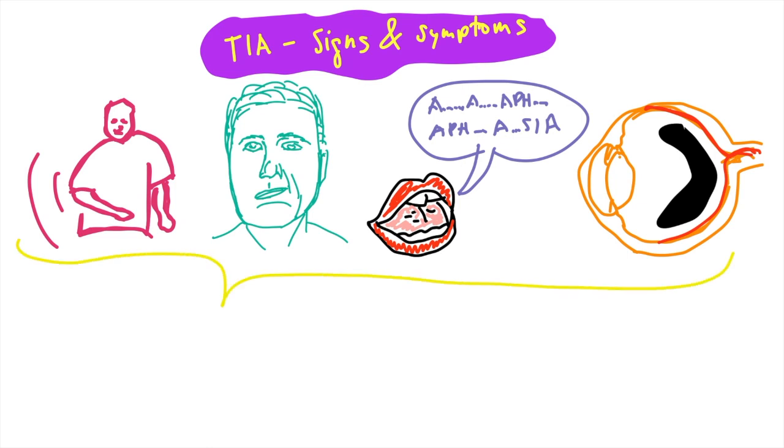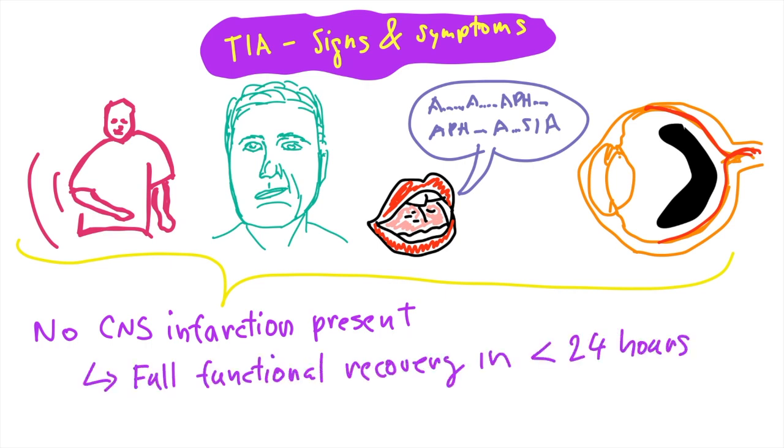The thing that I want you to understand is that transitory ischemic attack is only an ischemic attack and thus there is no structural defect in the CNS. The patients after this attack will fully functionally recover and according to definition they have to recover earlier than in 24 hours.